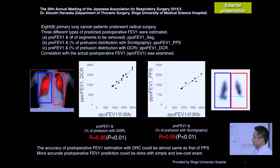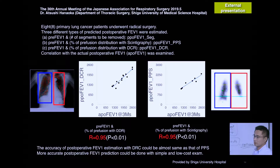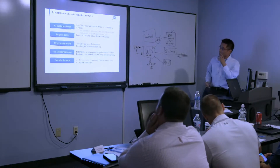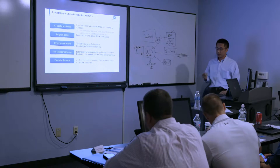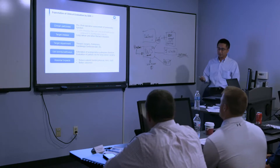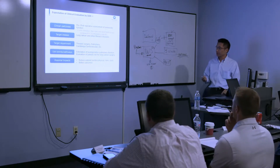This slide shows the results from the DDR. The horizontal axis is actual post-operative FEV1 and the vertical axis is the predicted FEV1 with the DDR. This one is from the cinchgram. So this is for the prediction of post-operative FEV1.